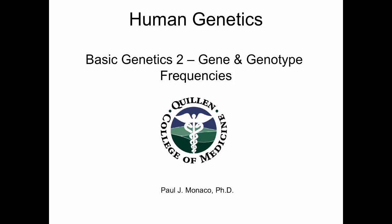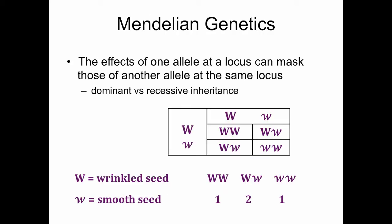In this podcast we're going to deal with gene frequencies and genotype frequencies. We can understand from basic Mendelian genetics that the effects of one allele at a locus can mask those of another allele at the same locus, and that's what dominant versus recessive inheritance is about. If you think of what Mendel was doing with his pea plants, big W might have been wrinkled seed and that would have been dominant to little w which would have been smooth seed.